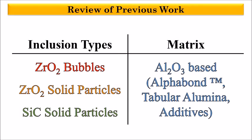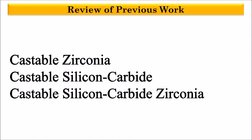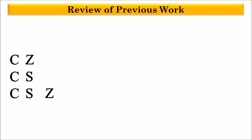As explained in previous videos, we designed and manufactured three refractory composite types that contain different volume fractions of zirconia bubbles, zirconia solid particles, and silicon carbide solid particles dispersed in an aluminum matrix. These refractory composites are labeled as castable zirconia, castable silicon carbide, and castable silicon carbide zirconia, or for short CZ, CS, and CSZ.